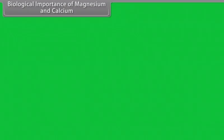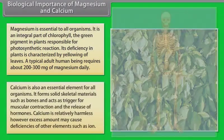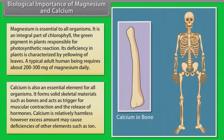Biological importance of magnesium and calcium. Magnesium is essential to all organisms. It is an integral part of chlorophyll, the green pigment in plants responsible for photosynthetic reactions. Its deficiency in plants is characterized by yellowing of leaves. A typical adult human being requires about 200–300 mg of magnesium daily. Calcium is also essential for all organisms. It forms solid skeletal materials such as bones and acts as a trigger for muscular contraction and the release of hormones. Calcium is relatively harmless; however, excess amounts may cause deficiencies of other elements such as iron.